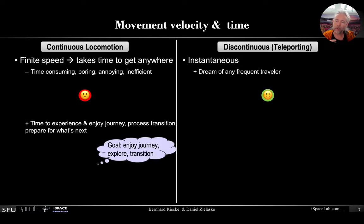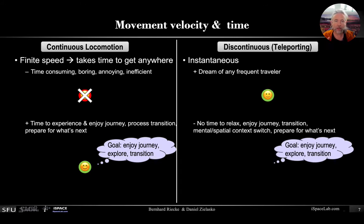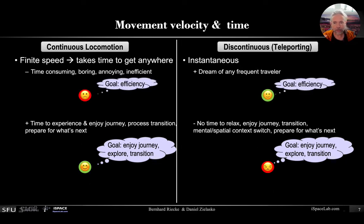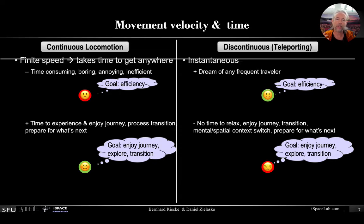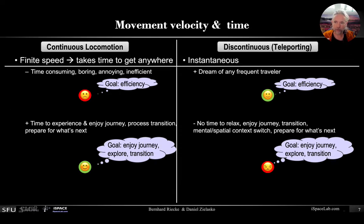However, if you actually want to enjoy the journey and explore a new place, then continuous locomotion suddenly looks really attractive, whereas discontinuous locomotion or teleporting does not. So it really depends on the goal and what you want to do — whether a feature or attribute is really an advantage or a disadvantage.